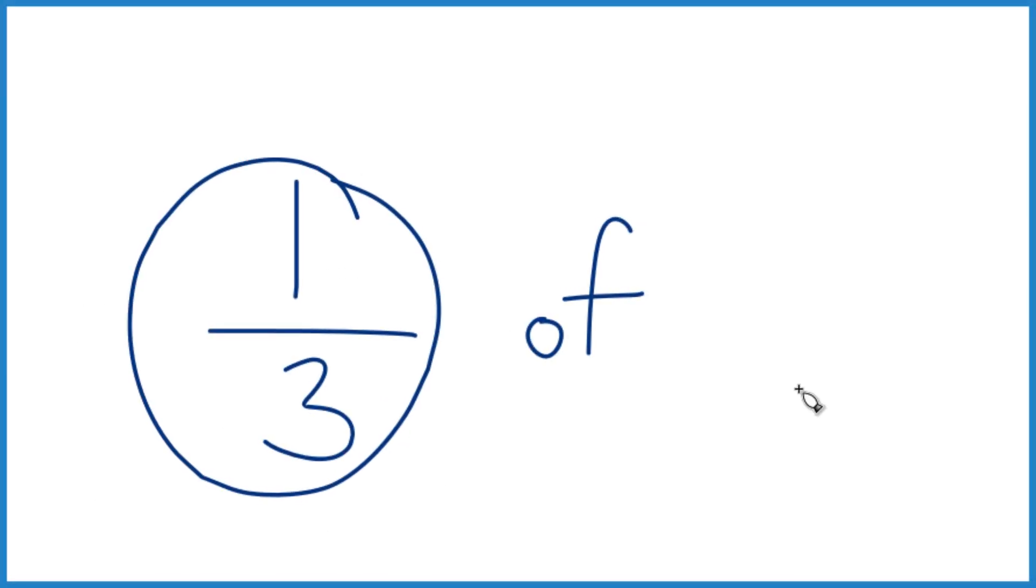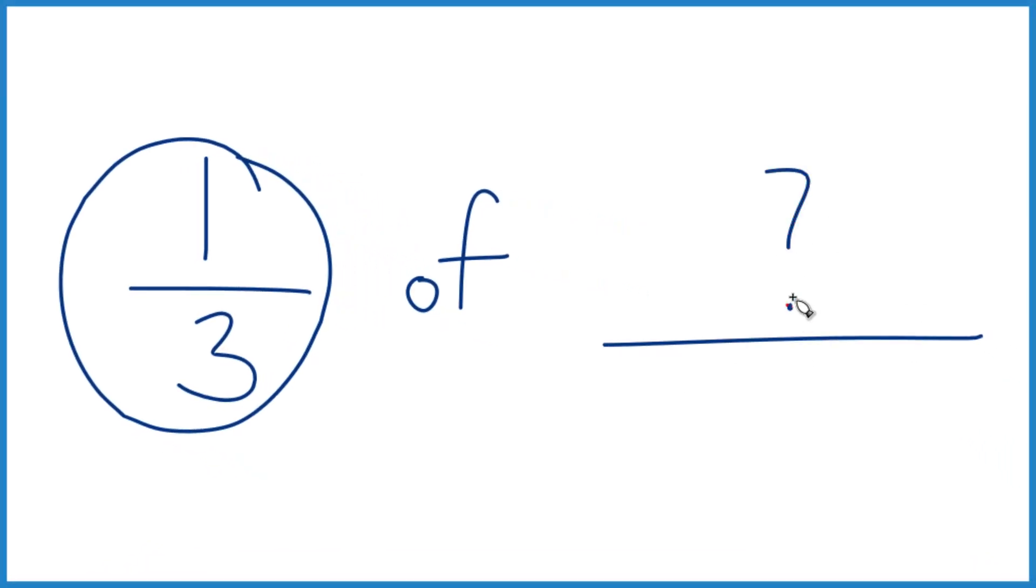Here's how you find one-third of a number, really any number, right? So let's just put a number in. Let's take one-third of 18.